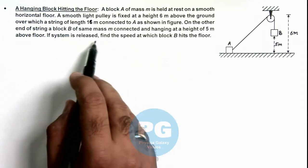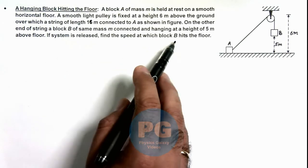Now it is saying if the system is released, we are required to find the speed when block B hits the floor.